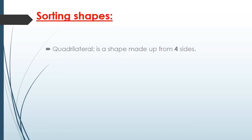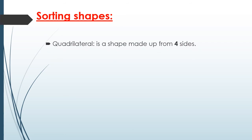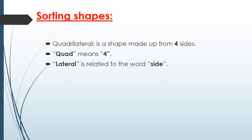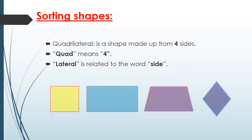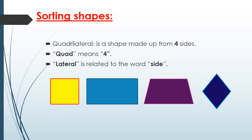Now we are going to talk about sorting shapes. If I want to sort some shapes, I will sort them by sides. We have to know a new word called quadrilateral. The quadrilateral shapes are made up from four sides. The word quad means four and lateral is related to the word side — like squares, rectangles, trapezoids, or rhombuses.